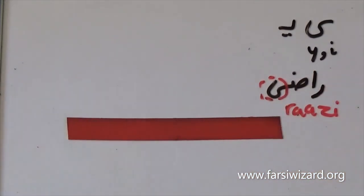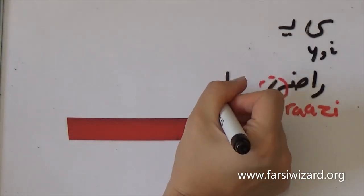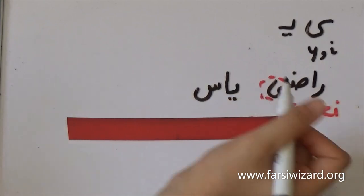And in the second example, the letter ye is at the beginning, so we have the word yas, which means lilac—you know, the flower. And here, because ye has appeared at the beginning of the word, you see that it is used in this particular format.